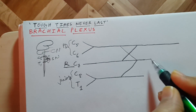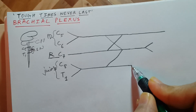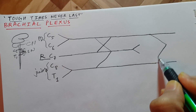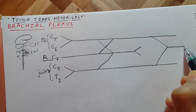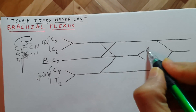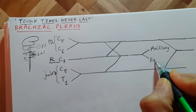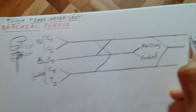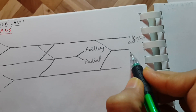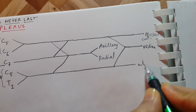From here we get two branches, and from this we get three branches. From one side we get the axillary nerve and radial nerve, and from the other we get the musculocutaneous nerve, median nerve, and ulnar nerve.